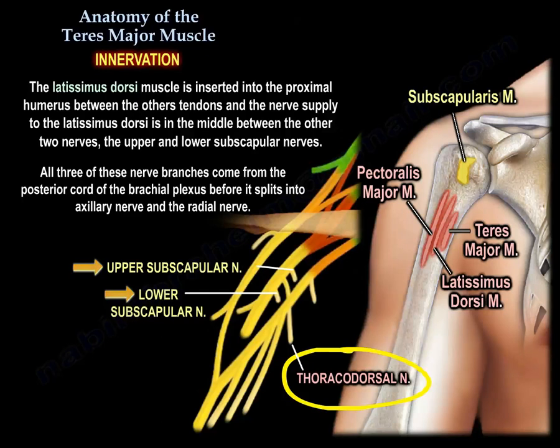All three branches — the upper subscapular nerve, the thoracodorsal nerve, and the lower subscapular nerve — come from the posterior cord of the brachial plexus, before it splits into the axillary nerve and the radial nerve.